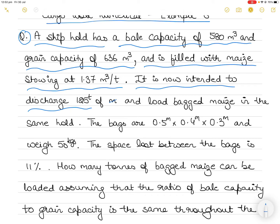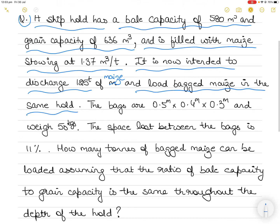It is now intended to discharge 125 tons of maize and load bagged maize in the same hold. So you have to discharge 125 tons of loose grain maize and instead load maize in bags.